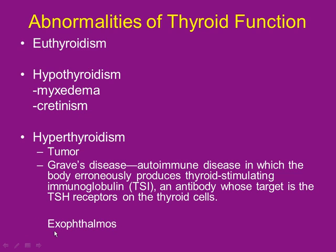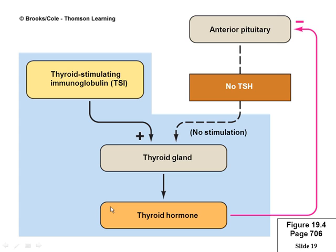One symptom of Graves' disease is exophthalmos — the eyes start protruding outward, bugging out a little. Proteins build up behind the eyes, pushing them forward. Unfortunately, this can cause blindness or vision loss because the optic nerve is being stretched, and it's very sensitive to stretch.